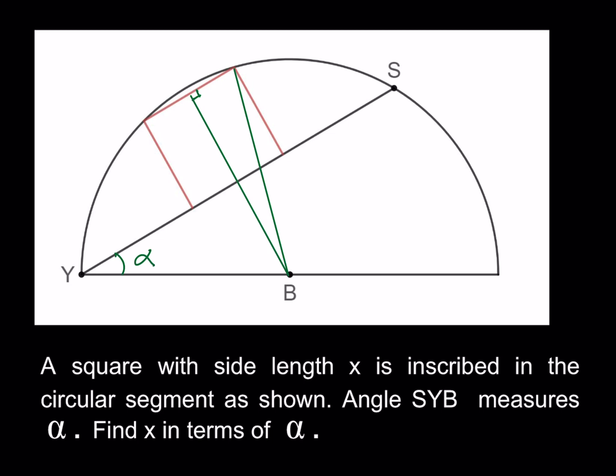Since we're finding the side length x, this side is x, this side is x, and this segment is x/2. The base of the square is parallel to the top, so they're two parallel segments. Anything perpendicular to one side of the square is also perpendicular to the opposite side.